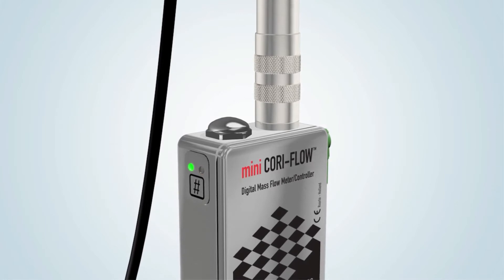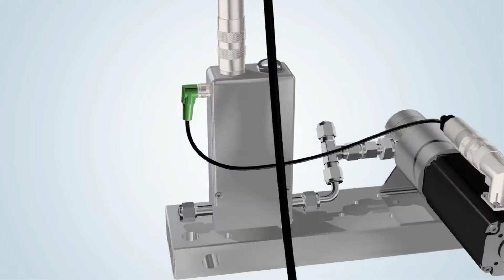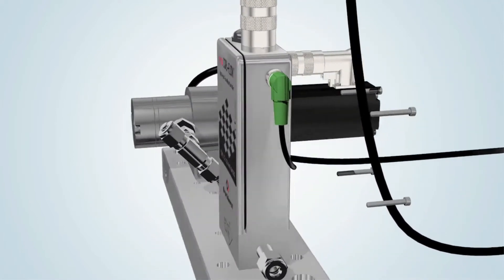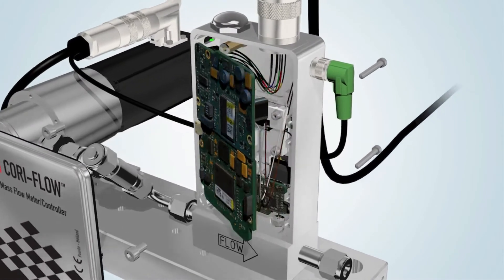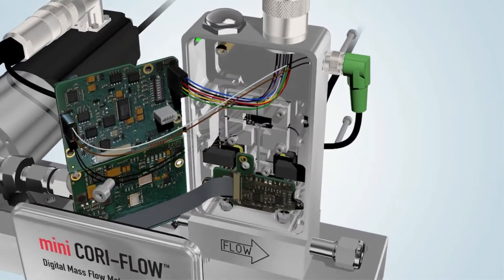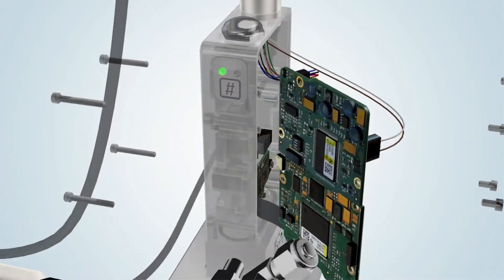Inside the robust mini Cori flow housing are the digital electronics, optical sensor, and sensor tube. The internal diameter of the sensor ranges from 0.25 millimeters to 3.1 millimeters. Once the power source is connected, the sensor tube immediately begins to vibrate.